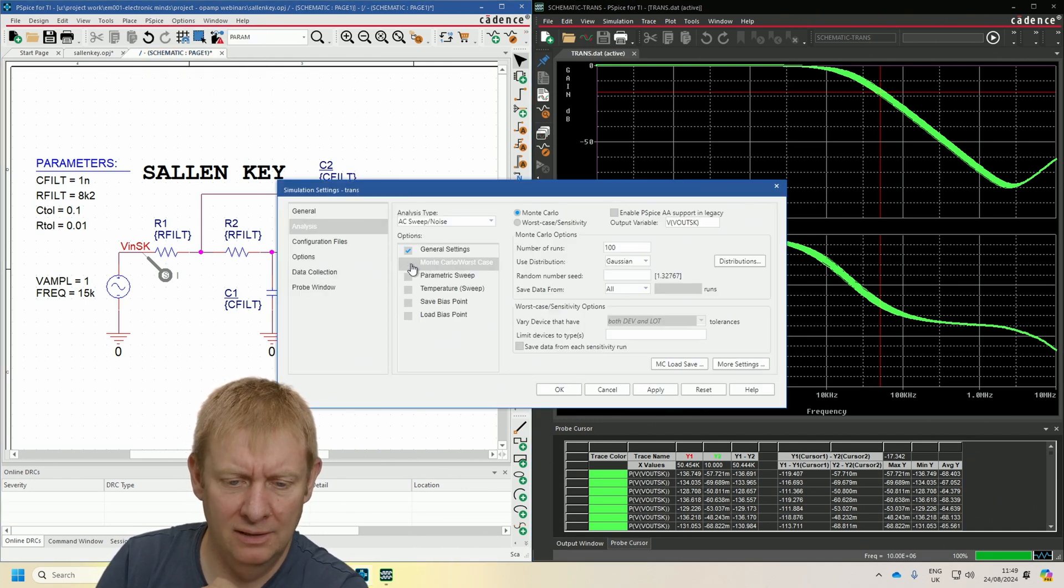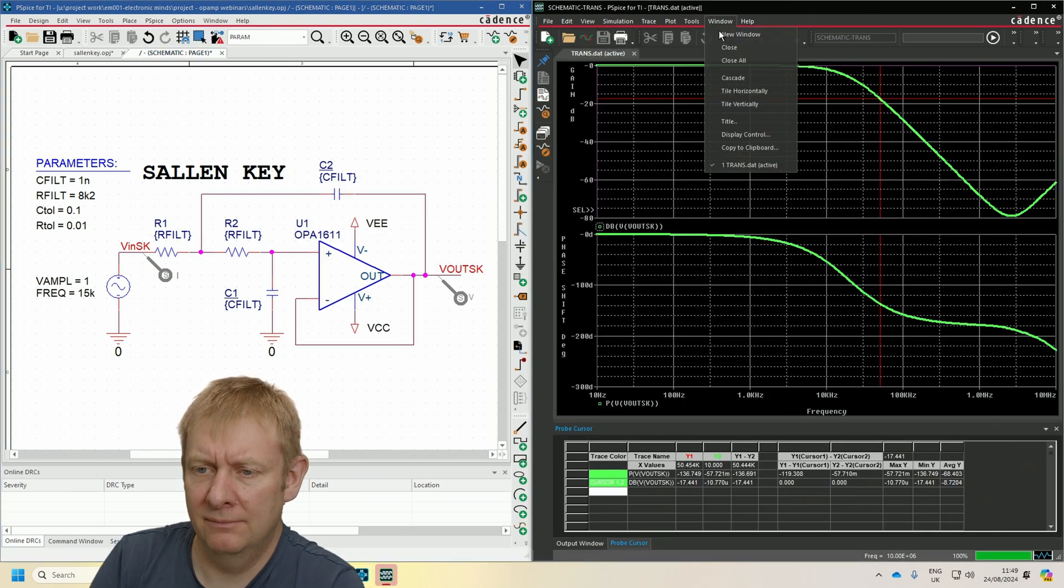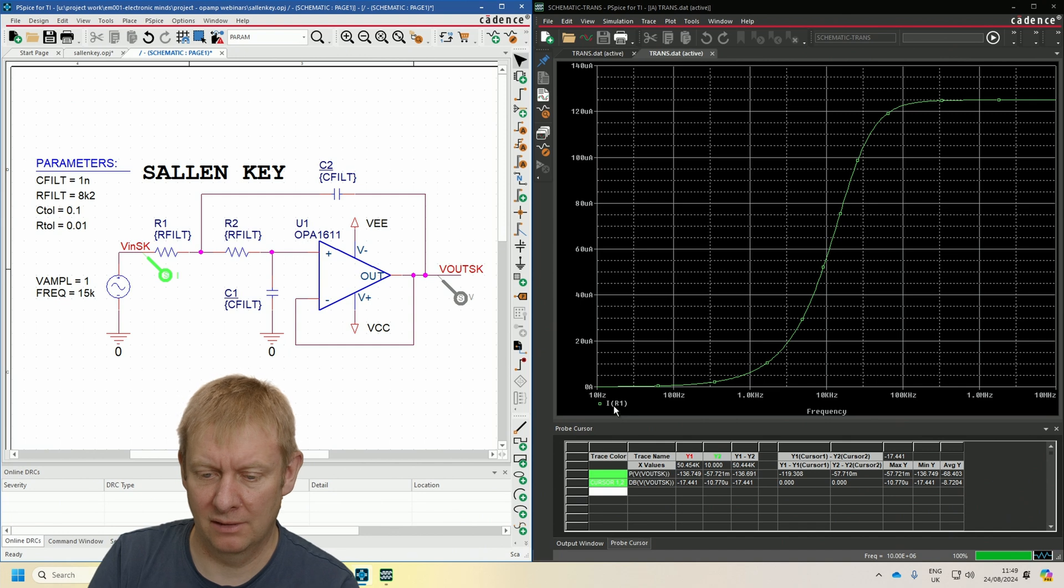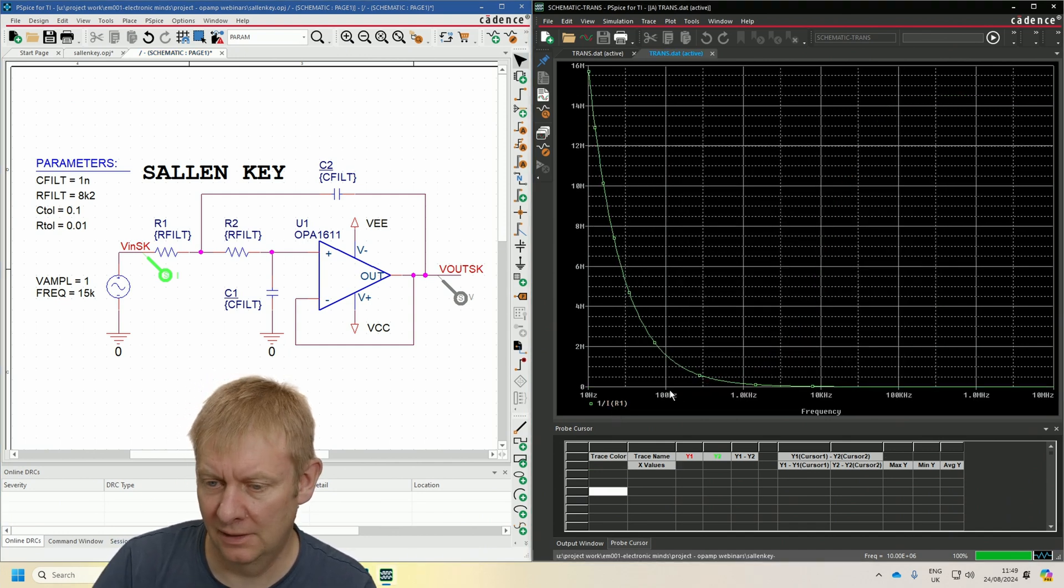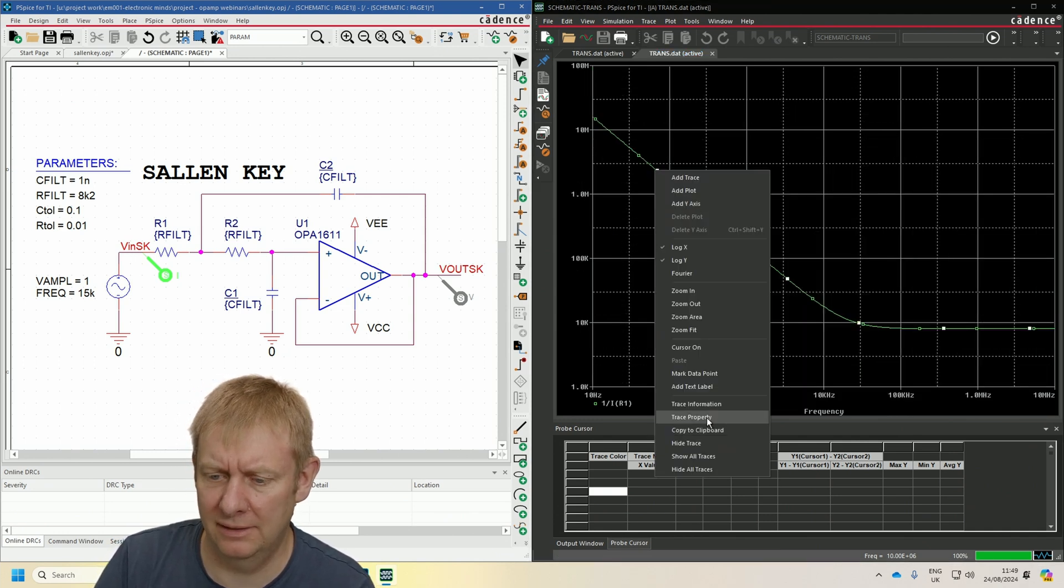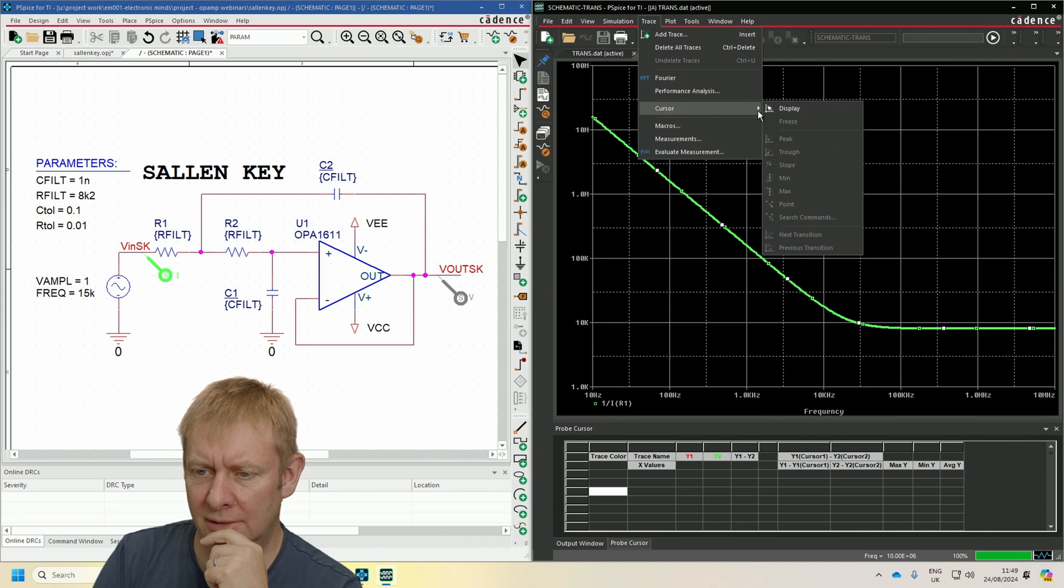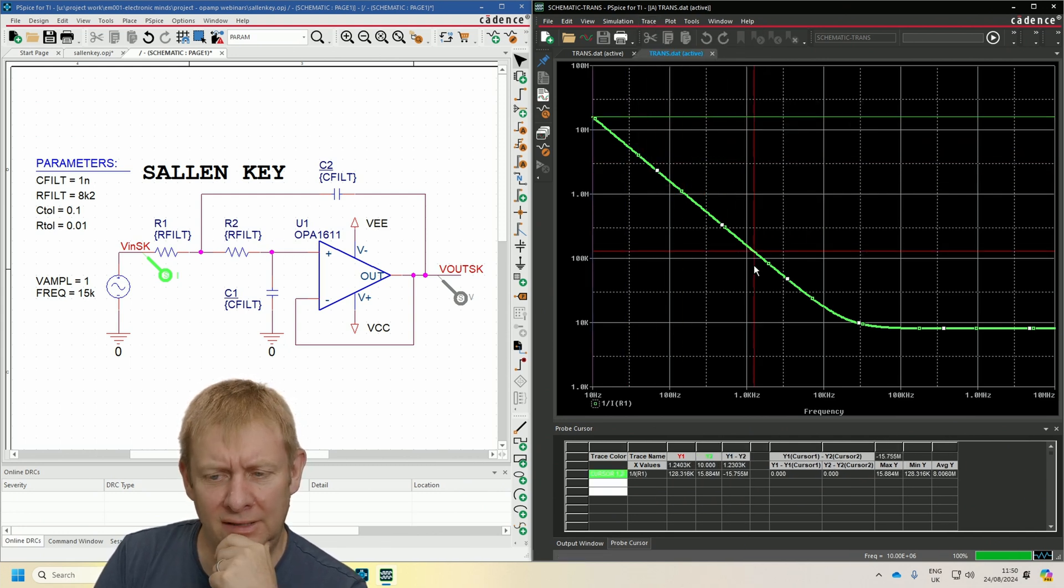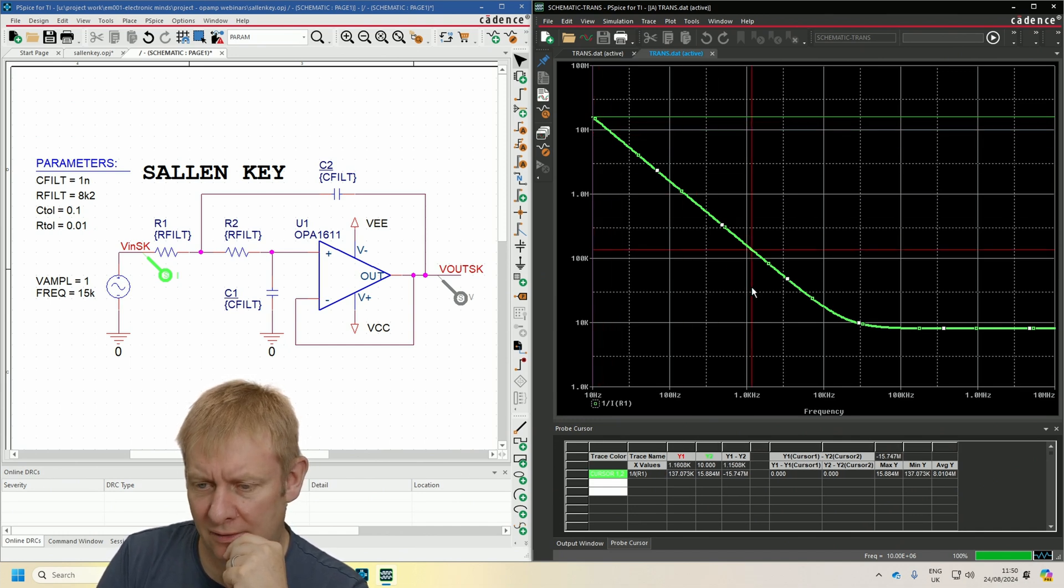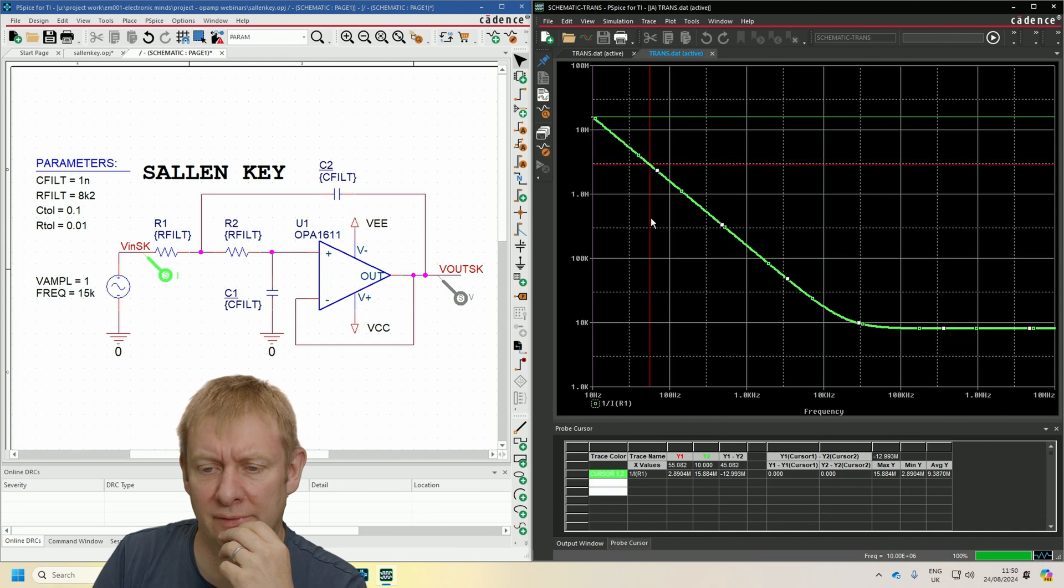There's one extra simulation I'd like to show. We're going to plot one divided by the input current, which gives us an idea of the input impedance of our filter. I'm going to change this to a logarithmic plot and make this trace a little bit bigger. In the passband of our filter, we have an input impedance which is very high. Down at 10 hertz it's above 10 megaohms. As we get to 1 kilohertz, it's still above about 160k.